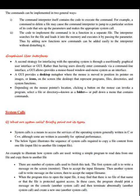Commands can be implemented in two general ways. First, the command interpreter itself contains the code to execute the command — for example, a delete command causes the interpreter to jump to a section of code that sets up parameters and makes the appropriate system call. Second, the code to implement the command is in a separate file; the interpreter searches for the file, loads it into memory, and executes it by passing parameters. This way, new commands can be added easily to the interpreter without disturbing it.